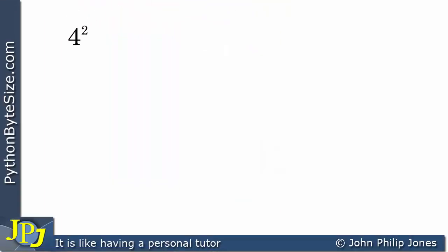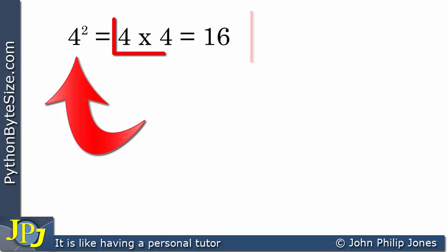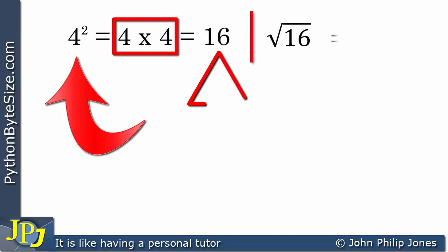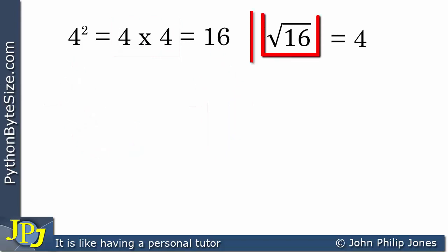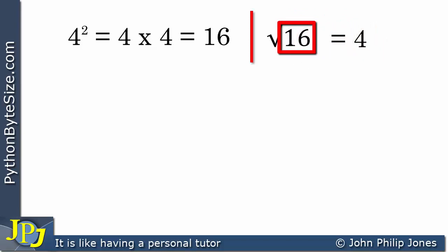In the previous video we looked at how we can square numbers and raise numbers to a power. Here you can see 4 raised to the power of 2 — in other words 4 squared — 4 times 4 is 16. And then of course we can take the square root of 16 and show that it is indeed 4, because if I take this 4 and multiply it by 4 I get the 16 that appeared within the square root.